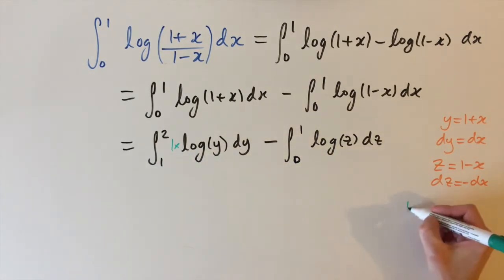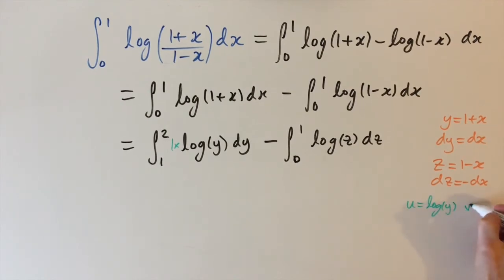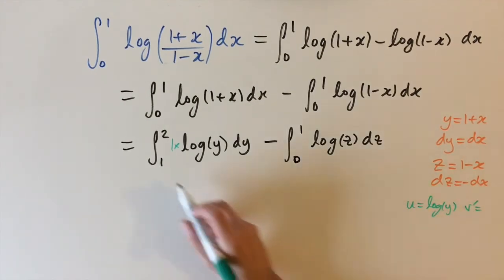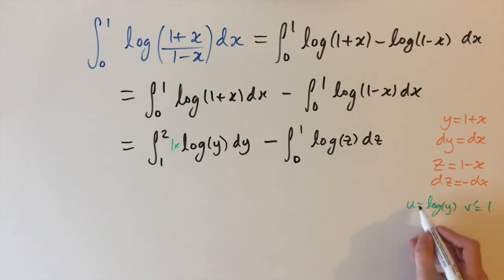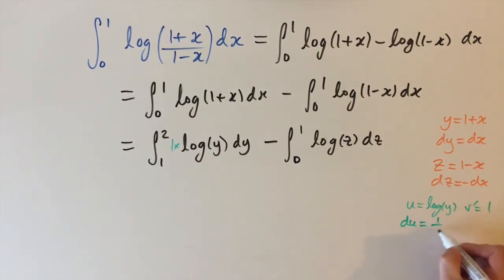So we're going to let u equals log of y and v dashed or dv however you like to write it as 1. Then we differentiate u to get du equals 1 over y and we integrate v to get v equals y.